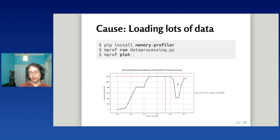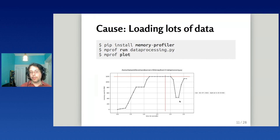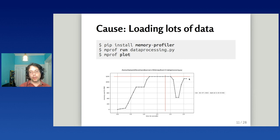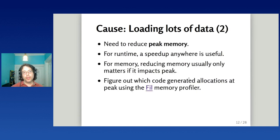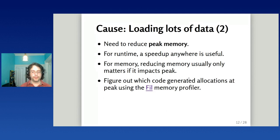The y-axis is megabytes, going up to about 1200, and the x-axis is seconds. This is a typical pattern for data processing applications: they start up, load some data, do some processing, load more data, free some, and process more. All the memory usage is driven by processing and the data loaded. In these situations you want to reduce peak memory — this is different from making your program faster.